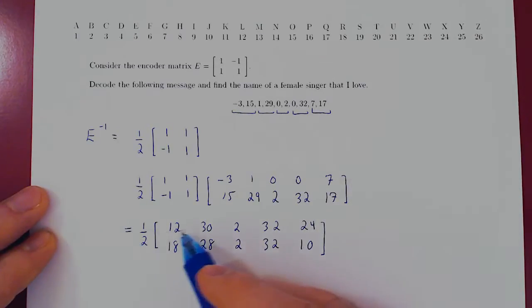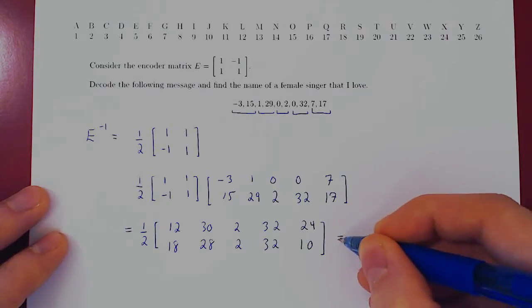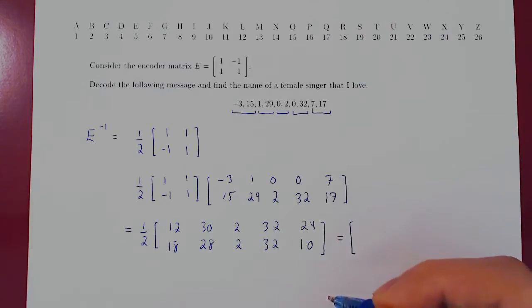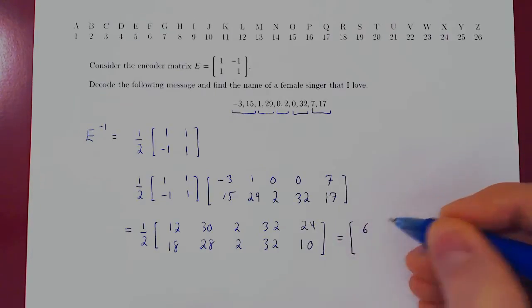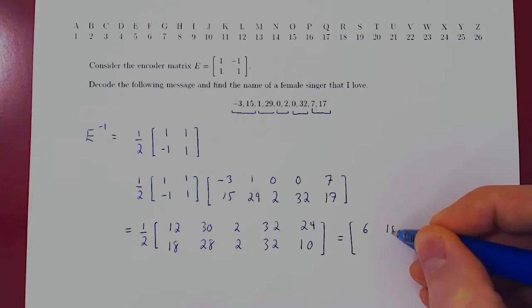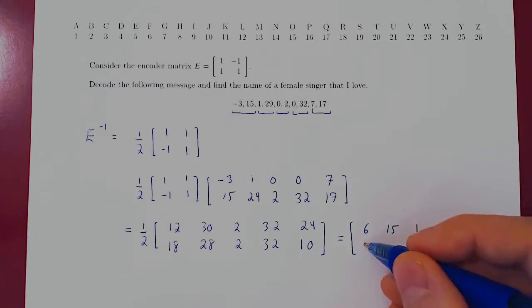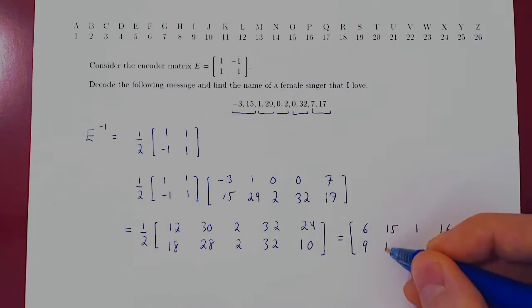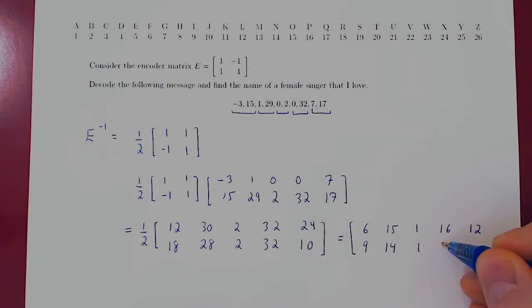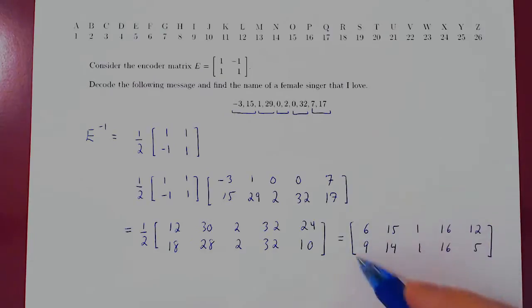We now must multiply every entry by 1 half. This is quite easy. So first row becomes 6, 15, 1, 16, 12. Second row becomes 9, 14, 1, 16, and 5. So now we have the decoded matrix.